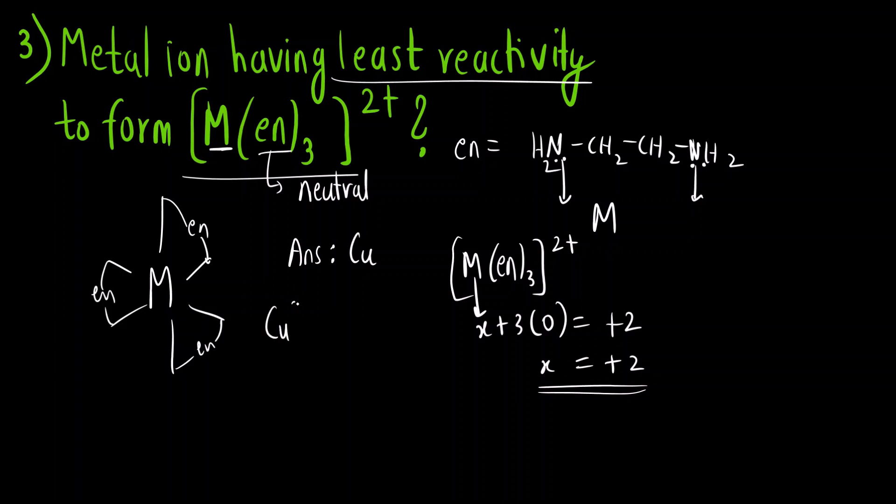Now copper +2, if I write down the oxidation state it is going to be, first let us write down for copper it is going to be argon 3d¹⁰ 4s¹. If I write down for Cu²⁺ I have to remove two electrons. One from 4s one from d. So it will be Ar 3d⁹ 4s⁰.